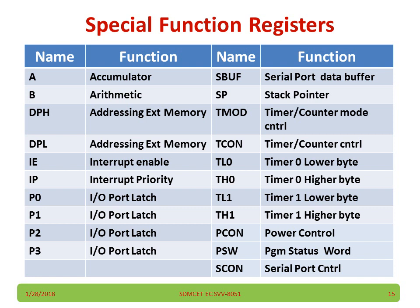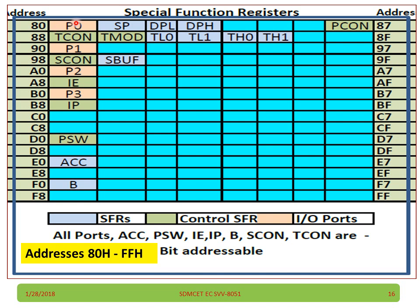We also have special function registers (SFRs). These are the names of the special function registers, and they have addresses too. These registers are used for particular functions. The B register is used whenever performing multiplication of two numbers or any arithmetic operation. These also have unique addresses — for example, port P0 has address 80H, SP has 81H, and PCON is at 87H. Addresses that have nothing written are not used in the 8051.